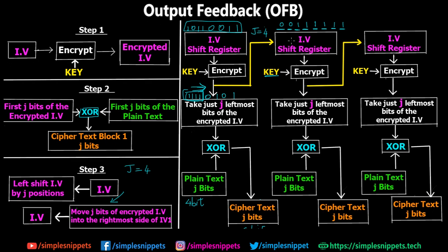For decryption, the process is exactly the reverse of encryption — I won't go into full detail as that could be a separate video. Logically, you take the cipher text, XOR it with j bits of the encrypted IV, and you get back the plain text. Then instead of left-shifting the register, you right-shift it to get back the previous IV, and then perform decryption of the next iteration.